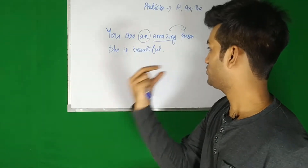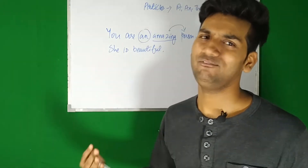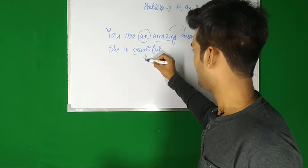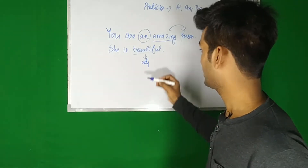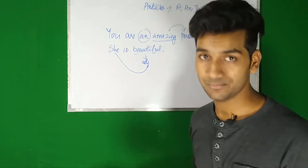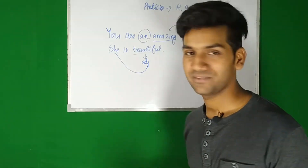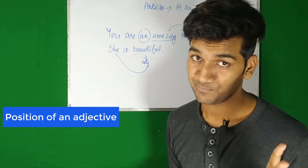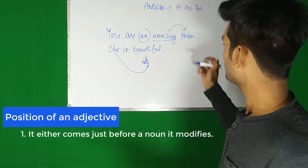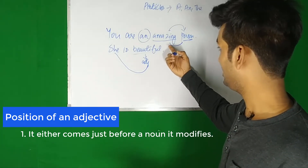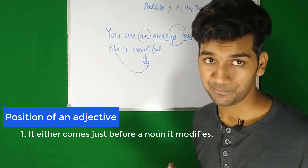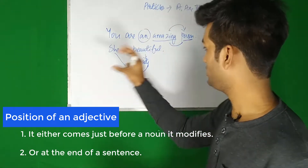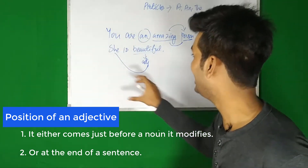In 'You are an amazing person,' 'amazing' gives information about the person - talking about the quality. 'An' tells us how many: only one person. In 'She is beautiful,' 'beautiful' is the adjective giving information about the subject, the pronoun 'she.' So from these two examples we learn two things: an adjective comes just before a noun, or it comes at the end of a sentence.